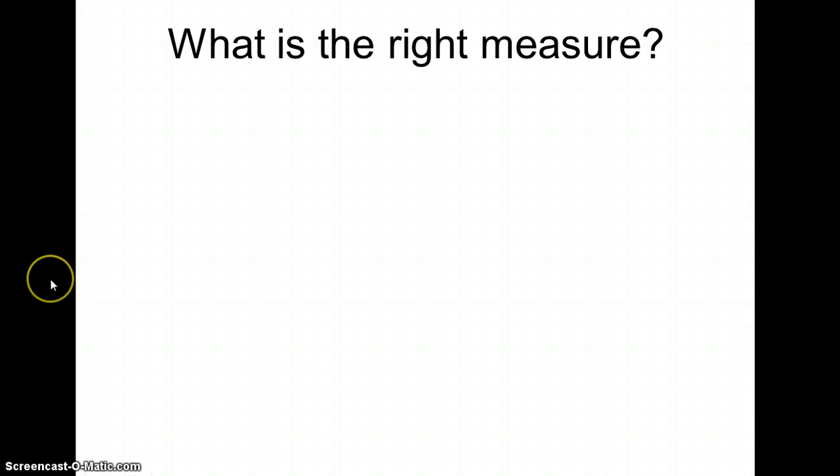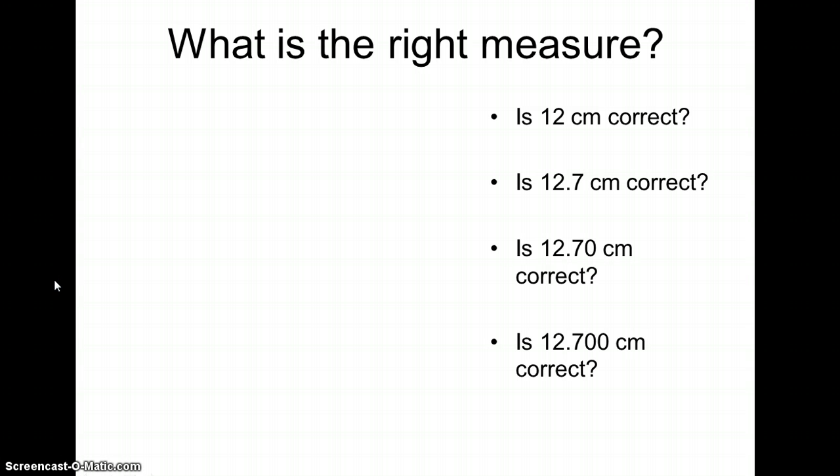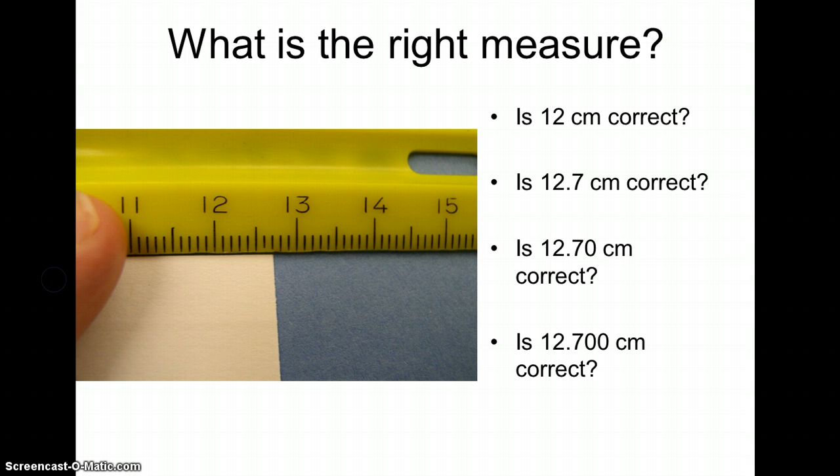So what's the right measure? Well, a lot of cases are going to depend on what the measuring device we use will allow us to actually record. In this case, my ruler, again, has tenths of centimeters. So which of these four measurements will reflect the length of the tan piece of paper? Let's see, 12 centimeters? We know it's beyond 12 and not quite to 13. We've got the ability to estimate even farther, because I have tenths of centimeters marked on this ruler.